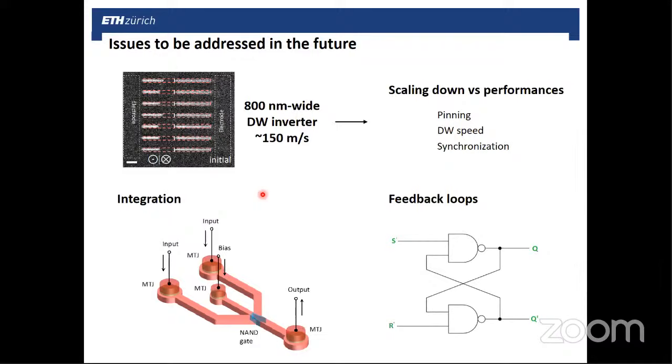So this integration part is certainly very challenging and remains to be done. Another interesting point is that our devices are typically 80 to 100 nanometer wide. When scaling down further, there are several issues that concern the domain wall propagation that can come up. For example, pinning, reduction of the domain wall speed. Eventually, this will lead also to synchronization problems or to the need for adding large delay times. Another problem of magnetic domain wall logic is that it is extremely difficult to realize feedback loops.